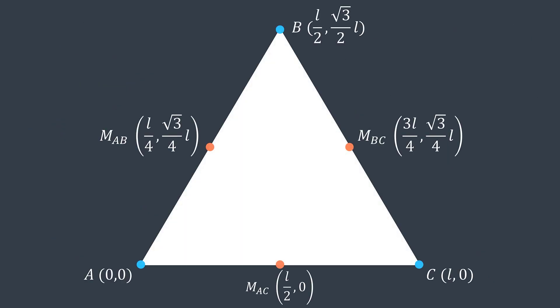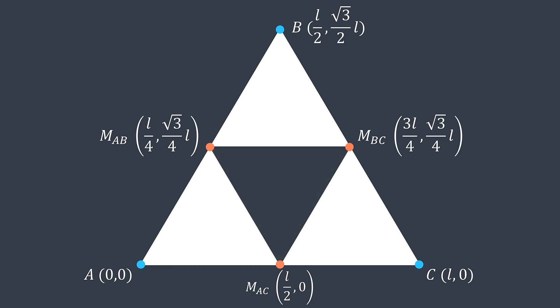Let's name our new three points midpoint AB, midpoint AC and midpoint BC. We now delete the triangle that they form.